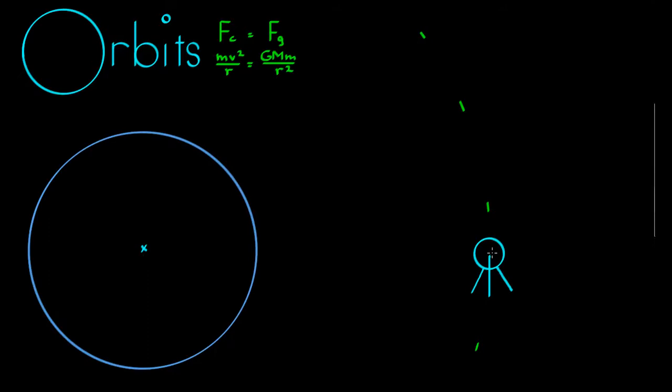We make a few assumptions with orbits in physics. Number one is that the satellite, or whatever is in the orbit, is moving in a perfect circle around whatever mass it's orbiting. Here it's the Earth. So if it's moving in a perfect circle and we also assume it has a constant velocity, then it must obey the circular motion formula.